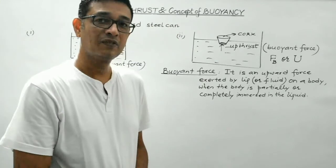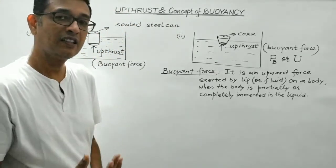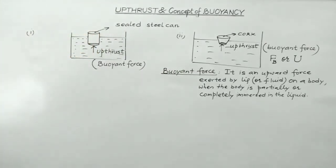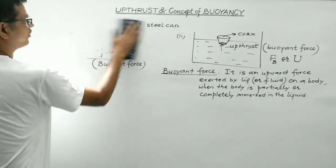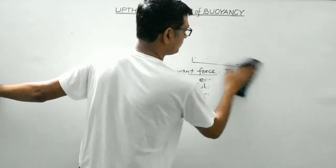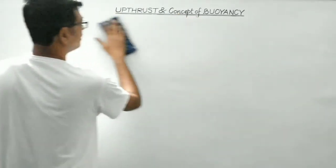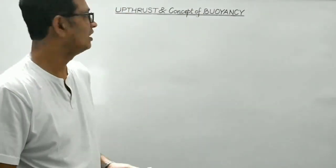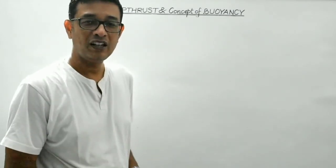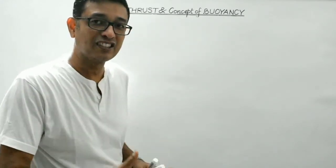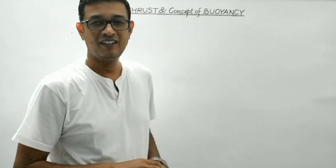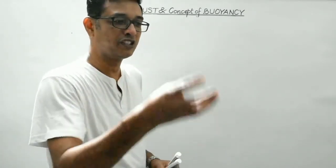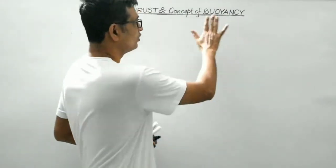In the next portion we will discuss why the buoyant force acts on a body and the basic reason for its origin. Buoyancy is actually due to the difference in pressure on the two surfaces of a body. The property of a fluid by virtue of which it exerts an upward force on a body that is partially or completely immersed in it is known as buoyancy.